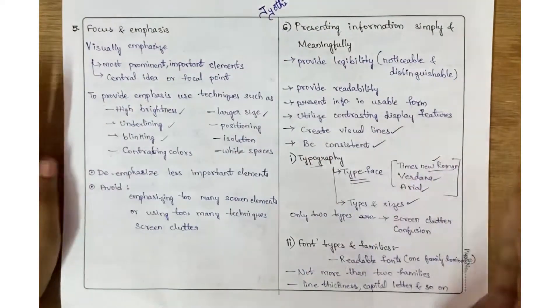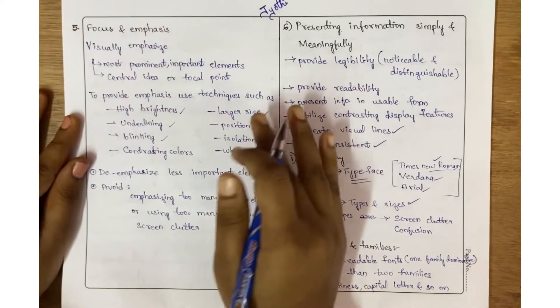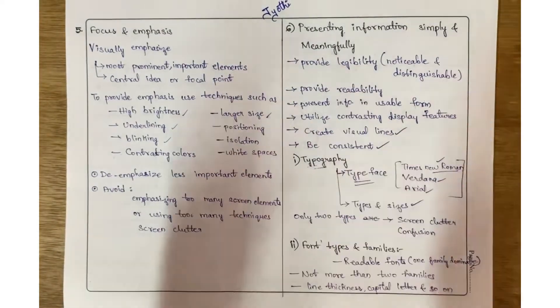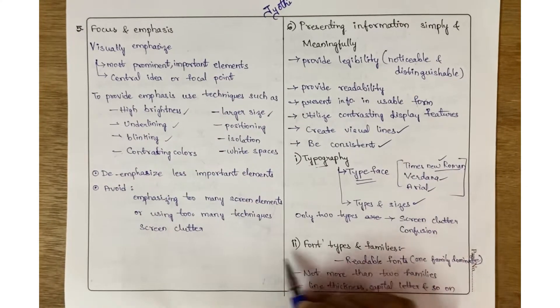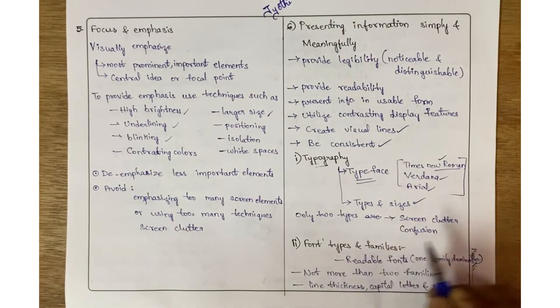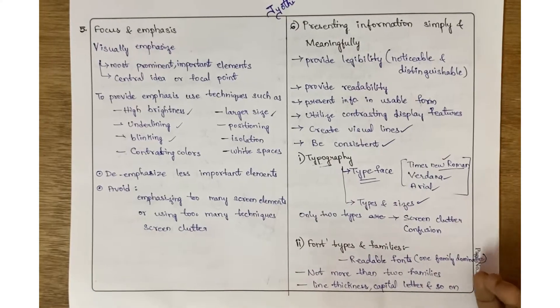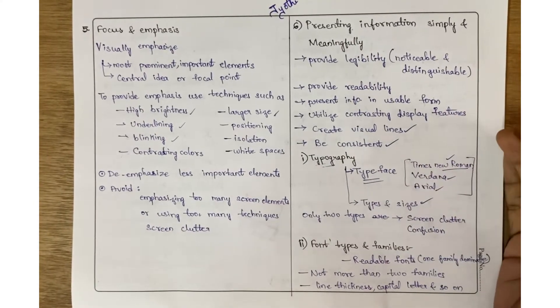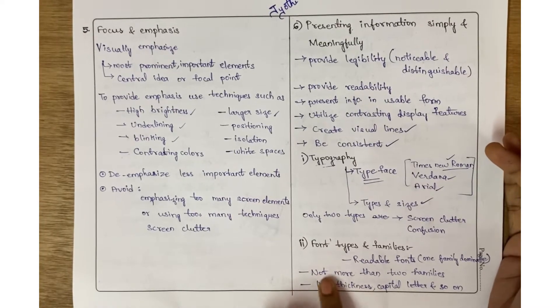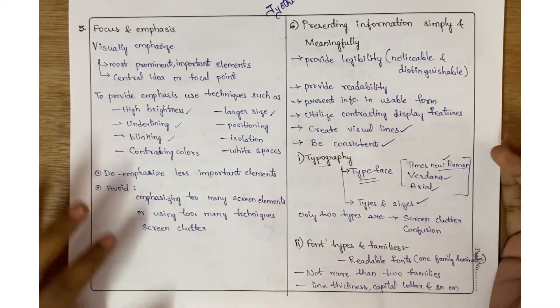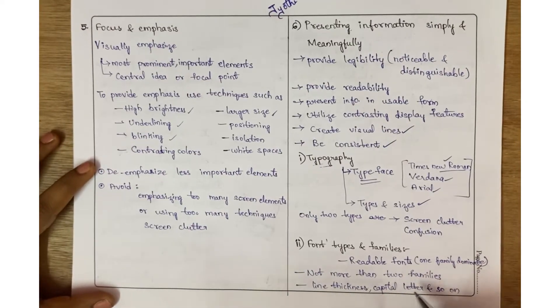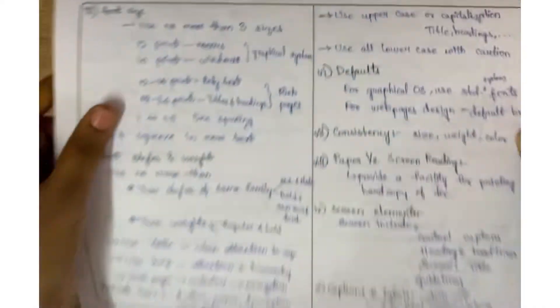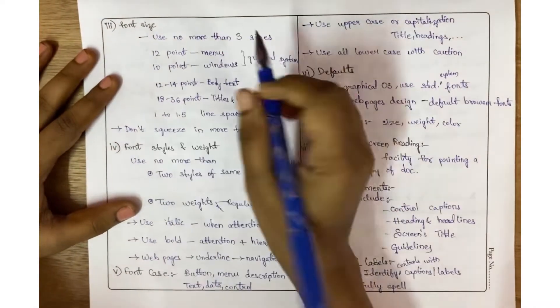To reduce that conflict, I have written this myself, meaning only one font style is used here. Font types and families: using simpler ones makes it more readable. Don't use more than two families. This includes line thickness, capital letters, and so on.